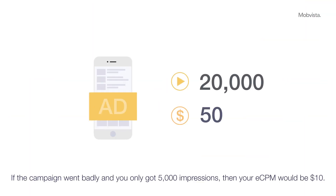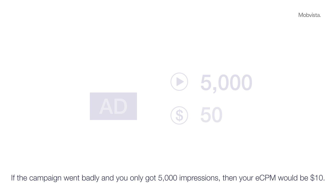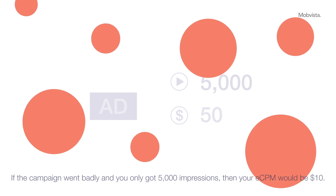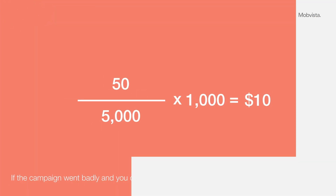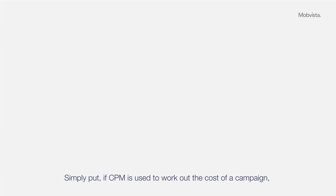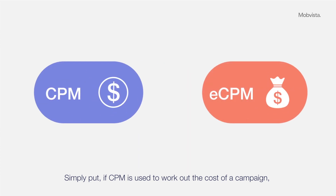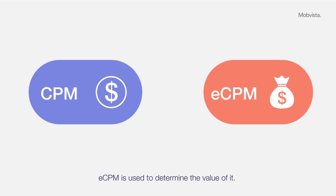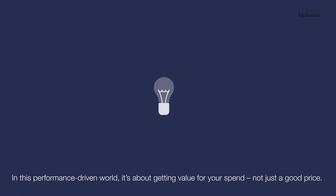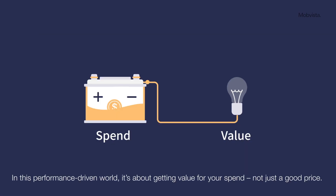If the campaign went badly and you only got five thousand impressions, then your eCPM would be ten dollars. Simply put, if CPM is used to work out the cost of a campaign, eCPM is used to determine the value of it. In this performance-driven world, it's all about getting value for your spend, not just a good price.